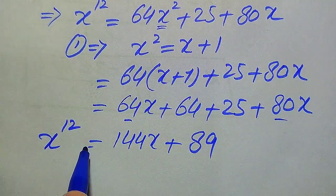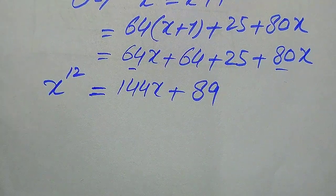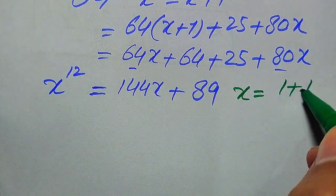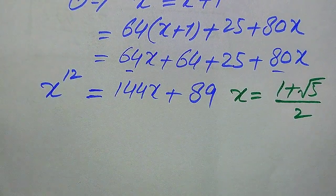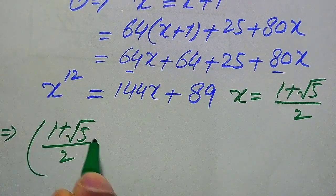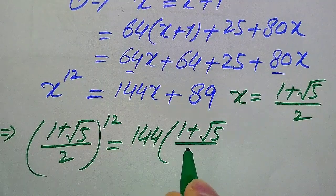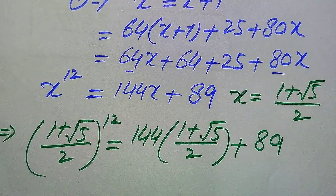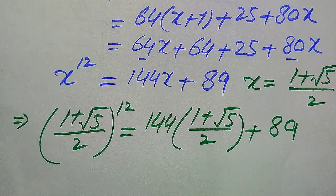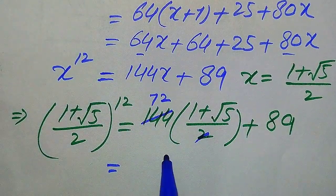Since x is still involved, we substitute back the original value of x, which we defined at the start: x equals (1 plus square root of 5) divided by 2. Substituting gives: (1 plus square root of 5) over 2 to the power of 12 equals 144 times (1 plus square root of 5) divided by 2 plus 89. Simplifying 144 divided by 2 gives 72.